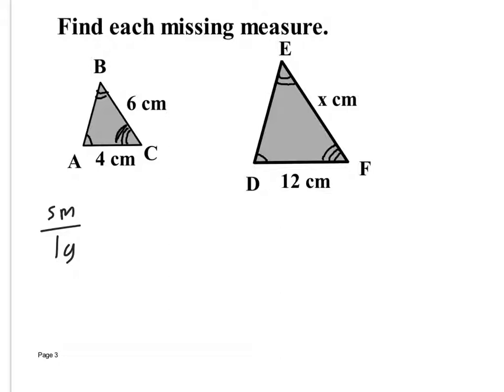Always set it up small over large. I recommend naming the sides rather than just writing numbers, because jumping straight to numbers leads to more mistakes. I'm going to identify a side on the small triangle — AC — and find what's proportional to it on the large triangle, which is DF. I know that because angle A is congruent to angle D and angle C is congruent to angle F by their tick marks. Then I use the only other side given on the small triangle, BC, which corresponds to EF on the large triangle.